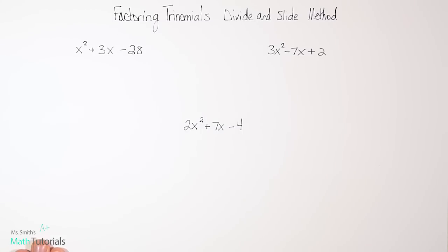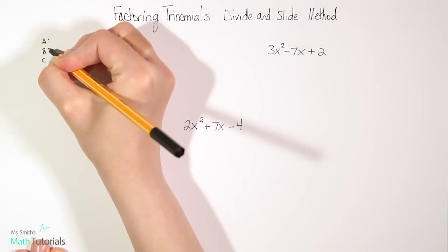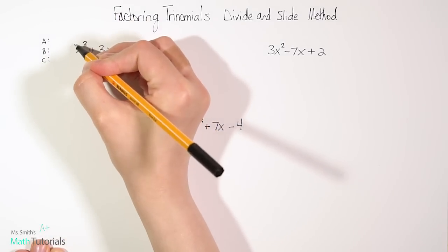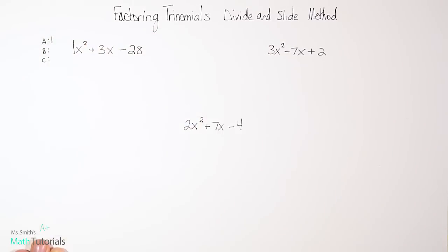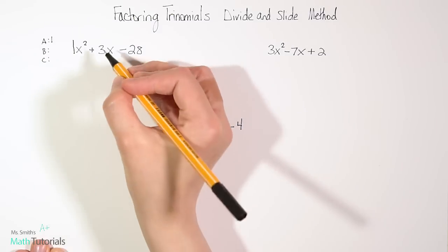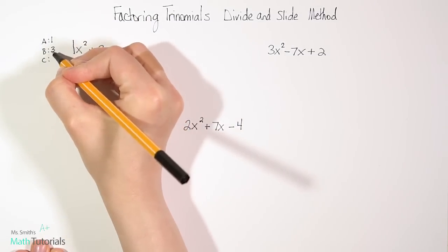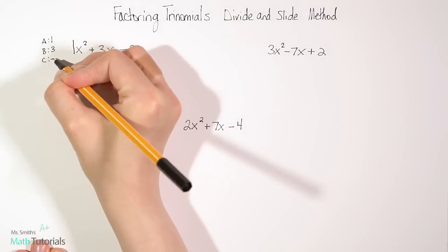So our first step is going to be to label our a, b, and c. Now once you get pretty good at this you don't need to physically label a, b, and c. You can just kind of do it in your head. But since we're learning, a in this case is going to be your first coefficient. So right here you might be thinking like there's nothing there. Well there's an understood one, so we'd label a as one. Your b value is your next coefficient next to just the plain x. So this would be a 3. And your c value is your constant. So in this case it's a negative 28.